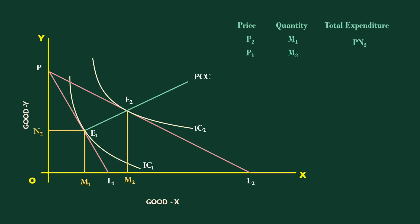At P2 price, the consumer spends PN2 on good X. At P1 price, he spends PN1 on good X. PN1 is less than PN2. As the price falls, the consumer spends less on the commodity. So the demand is relatively inelastic. The upward sloping price consumption curve signifies relatively inelastic demand.